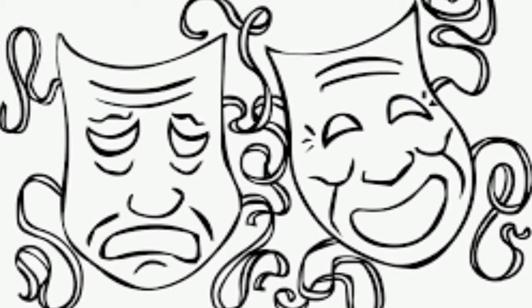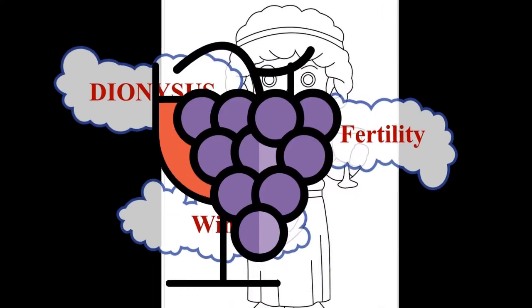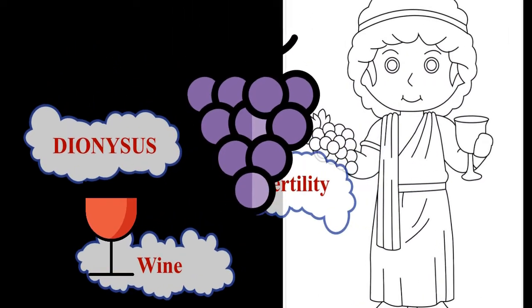In ancient Greece, there used to be a big theatre competition called the City Dionysia. This was named after the god Dionysus, the god of fertility and wine.